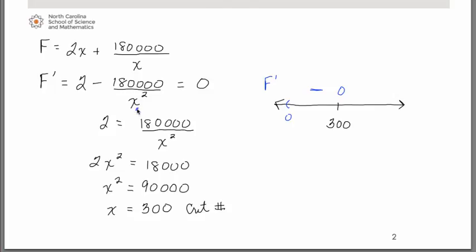If we choose something bigger than 300 and substitute into x here, maybe like 500 or something, we do get a positive value. Therefore, we have our derivative changing from negative to positive, meaning the original function is switching from decreasing to increasing, therefore creating a relative minimum at 300.